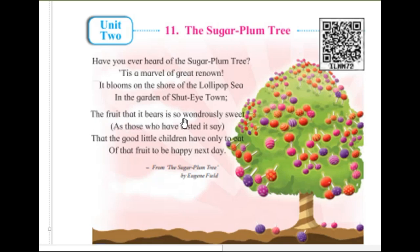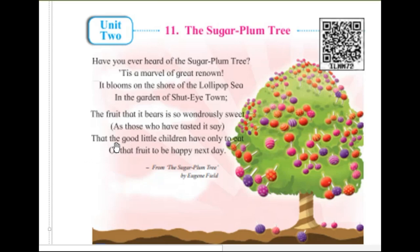'The fruit that it bears is so wondrously sweet.' 'Bears' here means produces or carries. 'Wondrously' means amazingly — it is very, very delicious and sweet. 'That the good little children have only to eat of that fruit to be happy next day.' So the children eat the fruit and they will be happy the very next day. It is a wonderful poem.